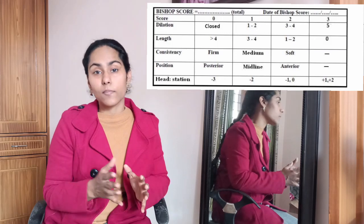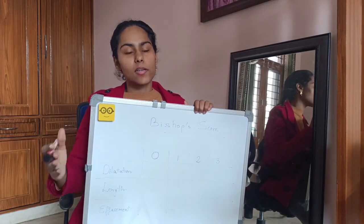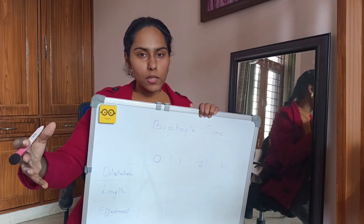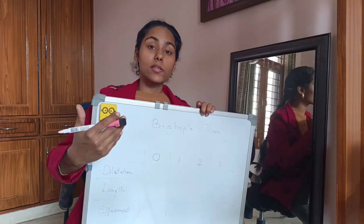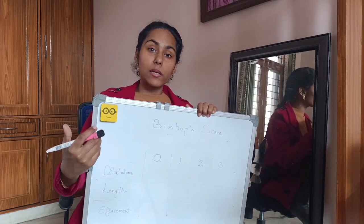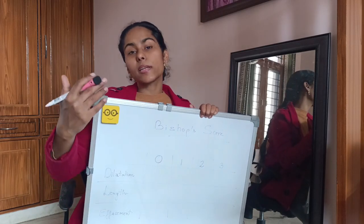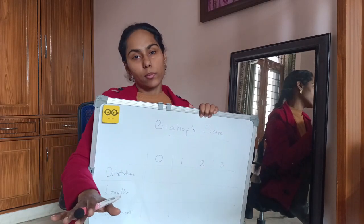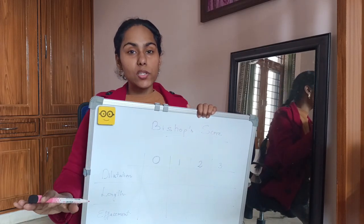This video focuses on the cervical length and cervical dilatation components only. The total maximum score possible in a Bishop score is 30. A score of more than six means the cervix is favorable and that induction of labor or vaginal delivery is likely to be successful.